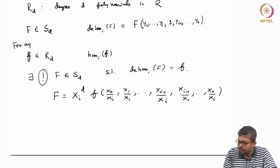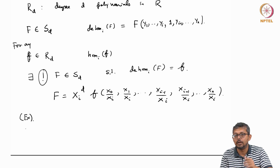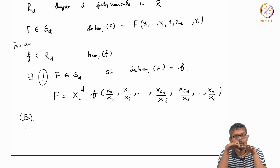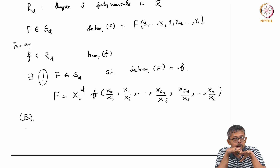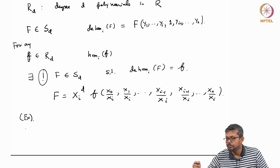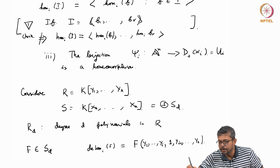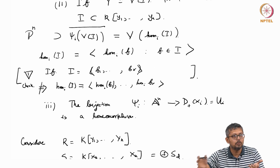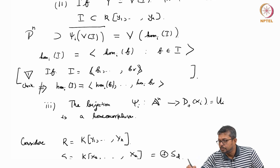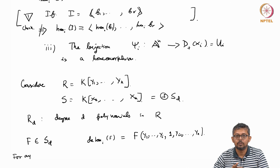I will leave this as an exercise and come back in the next class. The point is that if you have a homogeneous polynomial you can make it non-homogeneous, and vice versa. This will be useful when doing this correspondence, because one side is affine and the other side is projective — you have to play this game. I will stop here and we will continue.